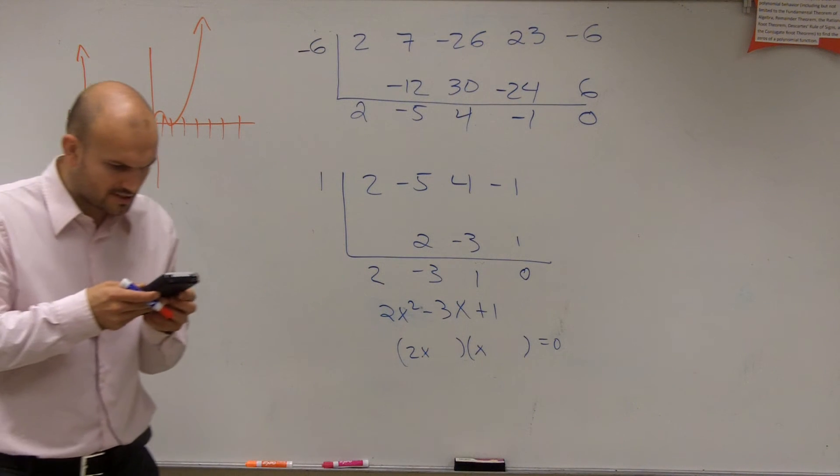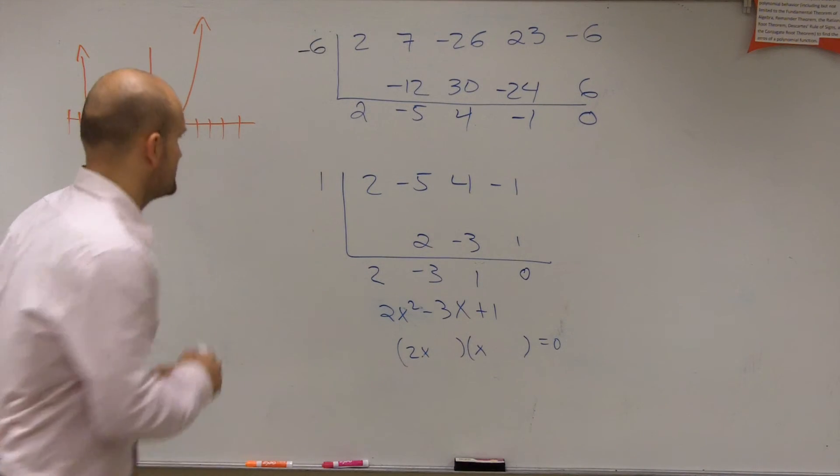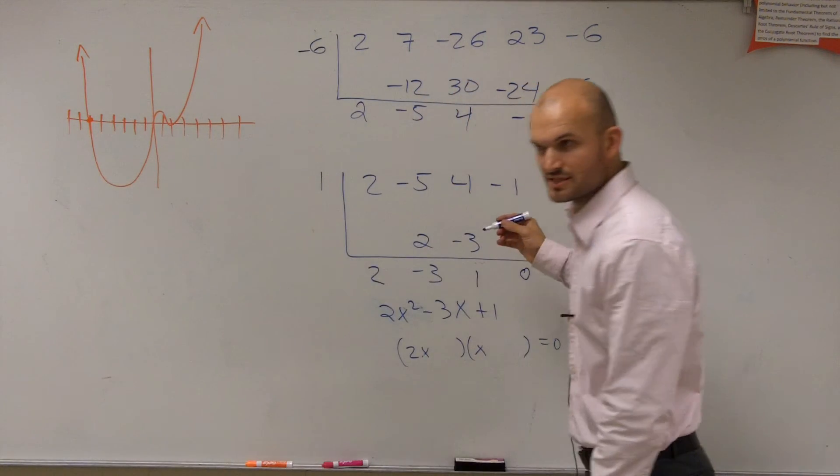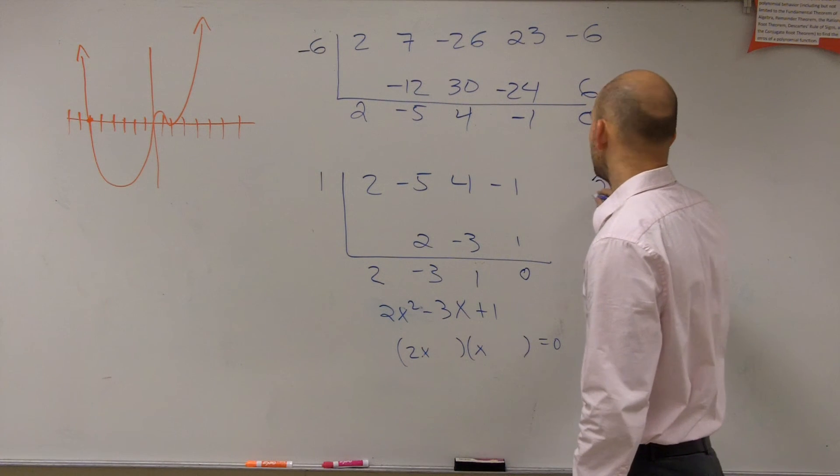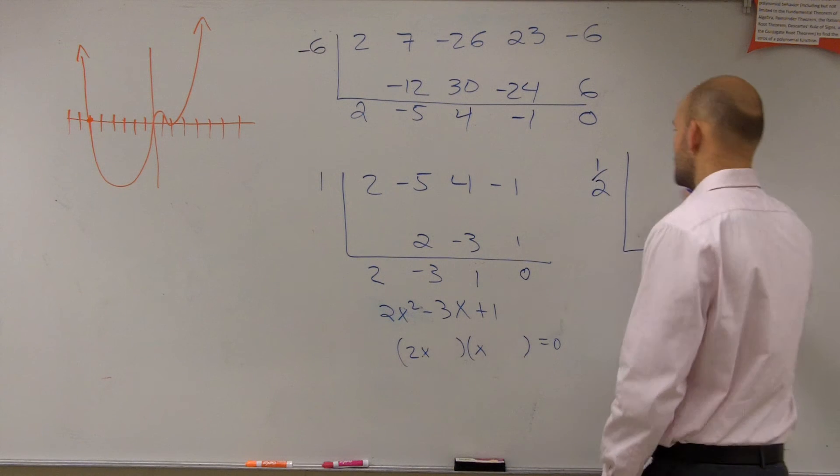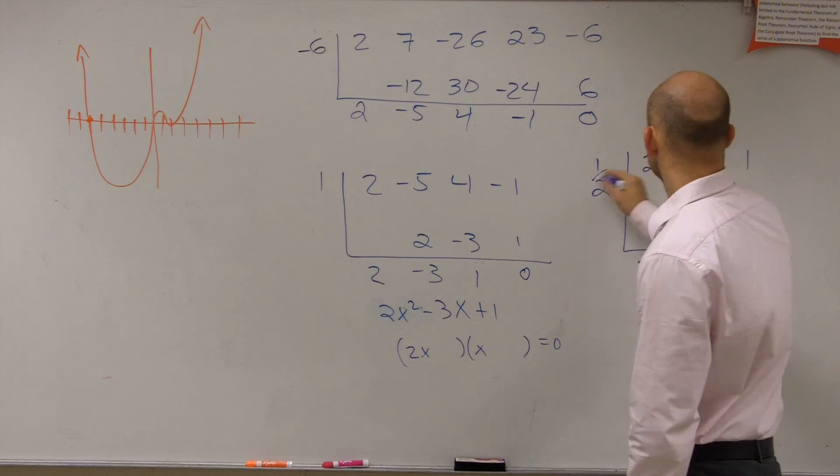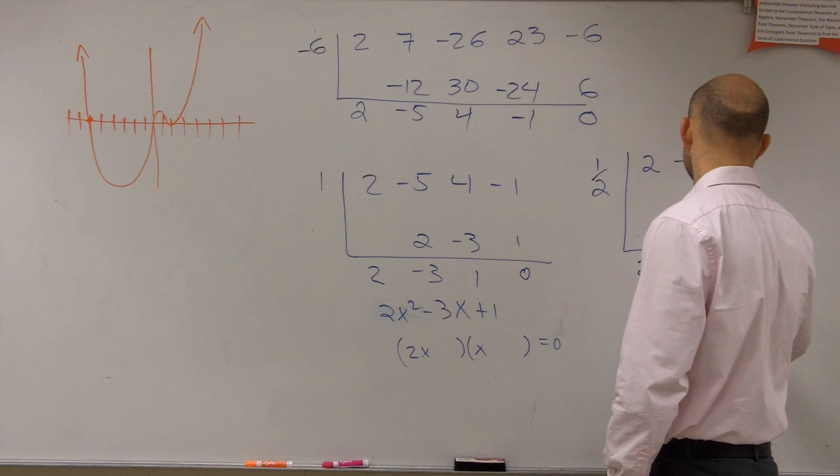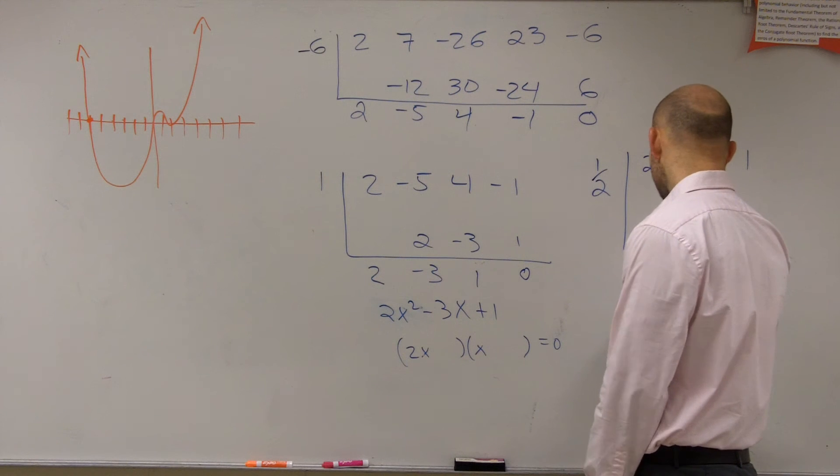Actually, you know what? I think it's, let me try one half. So let's take this result. We said one half was a zero, right? Did we say one half was a zero, a possible zero? Yeah. Let's try one half real quick. Why not? So I'm going to use my result, 2, negative 3, and 1. 2 times one half is 1, negative 2. Negative 2 times one half is negative 1, zero. Hey, look at that. It is.